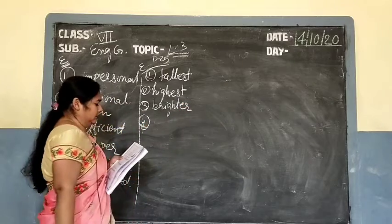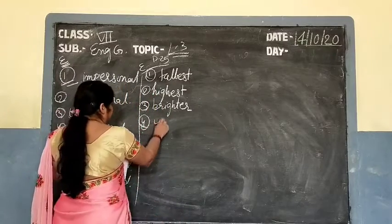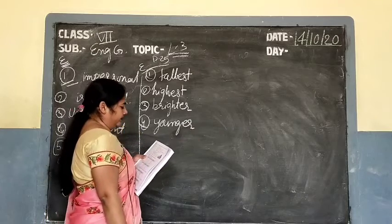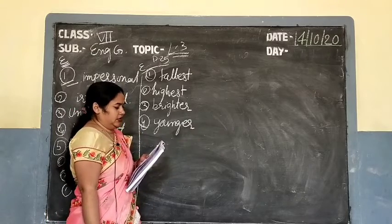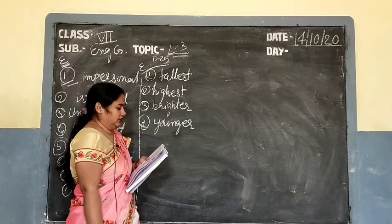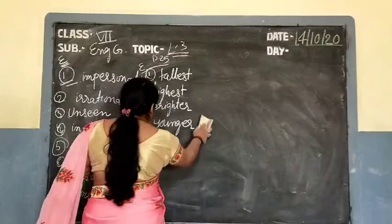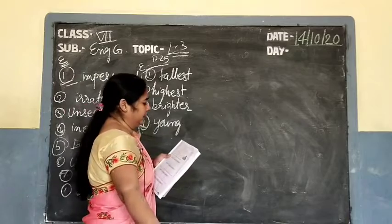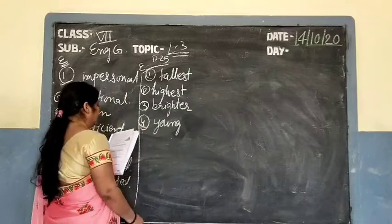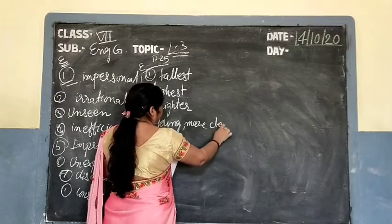Number 4: He is dash — 'young' becomes 'younger'. He is younger. Number 5: Ramu is dash clever than his elder brother — what will it become? 'Clever' takes 'more clever', so Ramu is more clever than his elder brother.